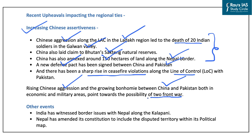Besides China and Pakistan, other nations are also getting into scuffle with India. India has witnessed border issues with Nepal along the Kalapani region, and Nepal has amended its constitution to include this disputed territory within its political map. It is being said that China has been interfering in Nepal's affairs and is the reason for India's recently emerged problems with Nepal.